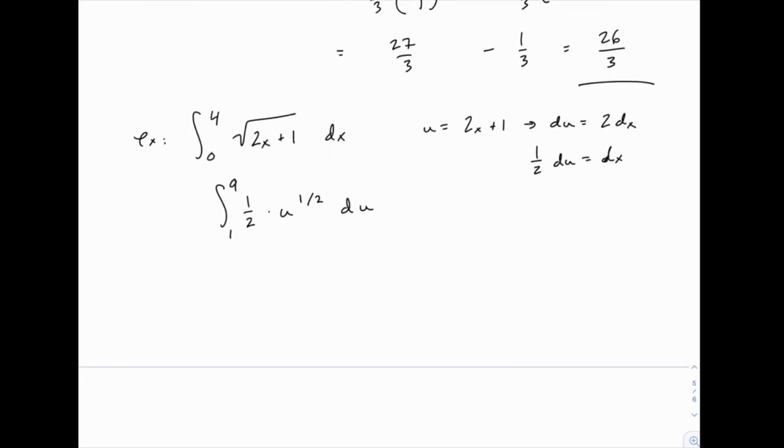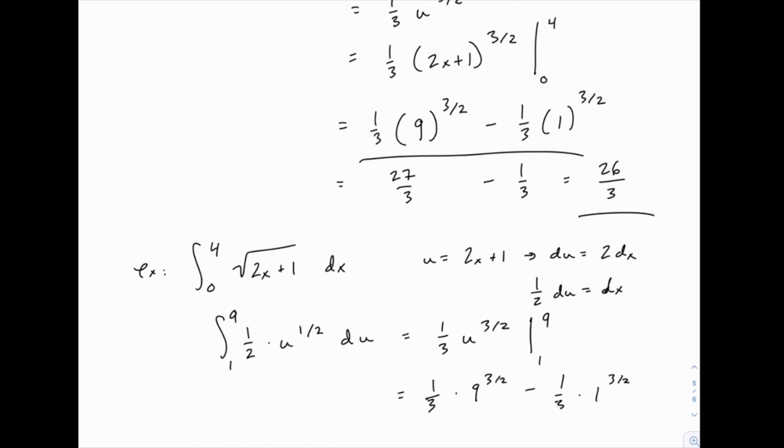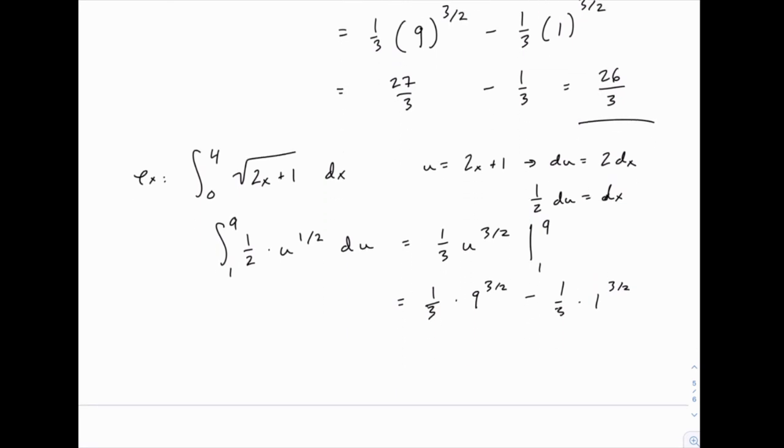Now, if we do this, it turns out we don't actually have to come back to x at the end. When we take this integral and we get one-half times two-thirds u to the three-halves or one-third u to the three-halves, we can plug in the limits of integration right here without coming back to x. So it saves us that step as well. And we can immediately write one-third times 9 to the three-halves minus one-third times 1 to the three-halves, which again is exactly what we had right here. We just got there in one fewer step. And then of course we write the same thing we did last time and the answer is exactly the same.